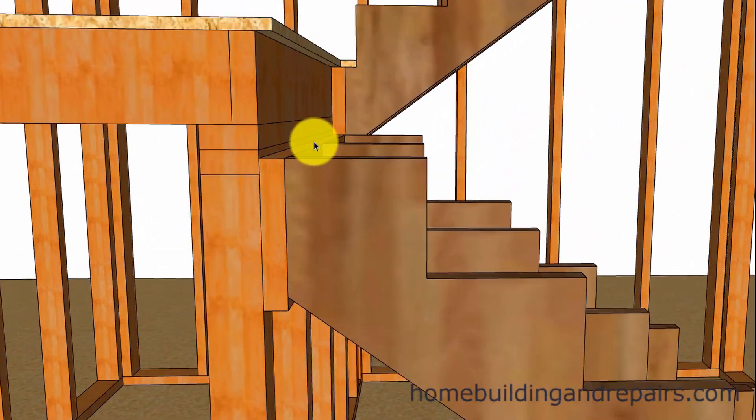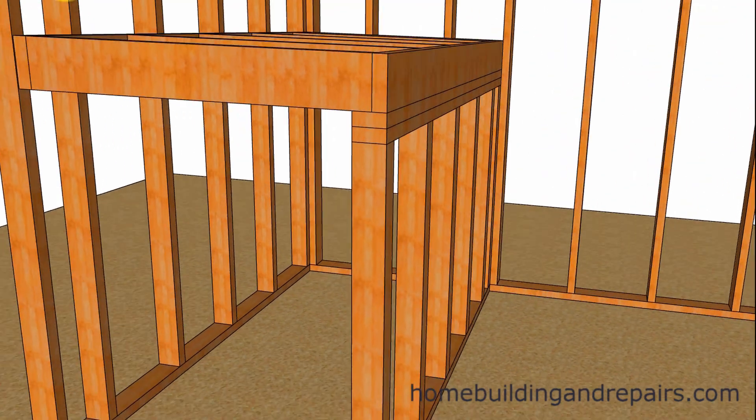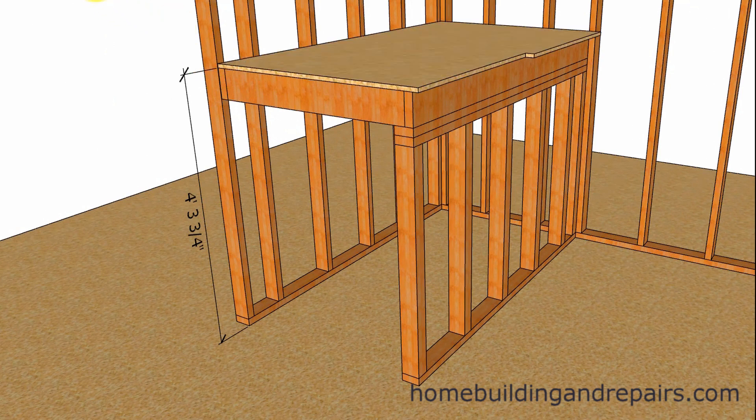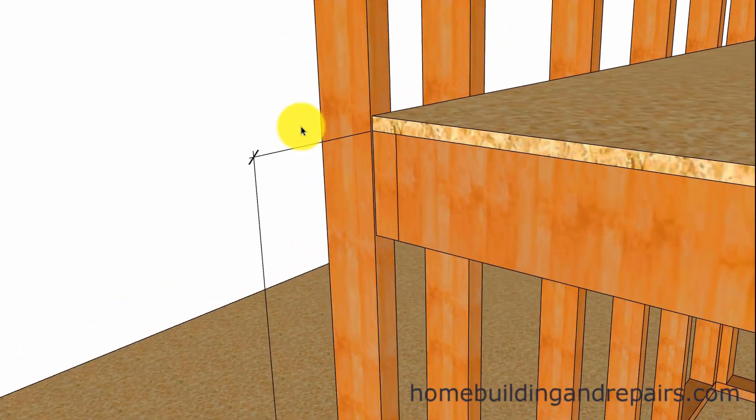So here we have a set of stairs where everything is perfect. The joint here is tight and the step is going to be horizontally level. That is because we did subtract for the thickness of the floor sheathing here and put it in the right spot.